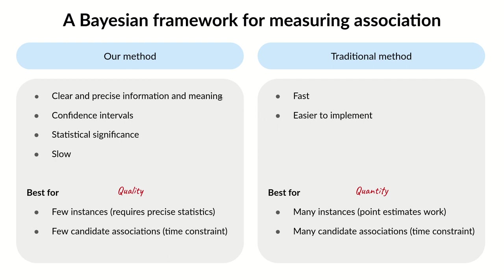Comparing our method to the traditional method is basically a trade-off between quality and quantity. Our method provides clear and precise information about the data, but is slower to compute, so we believe it's better suited for when you have to test fewer candidate associations.